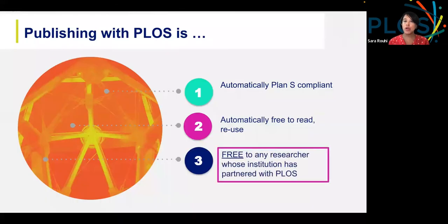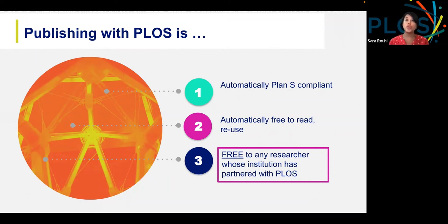When you publish with us, you're automatically Plan S compliant, meaning that your work is fully openly available under the correct licenses. You can automatically repurpose and reuse the work, and most importantly, if you have an institutional agreement with PLOS, you're able to publish with no fees.